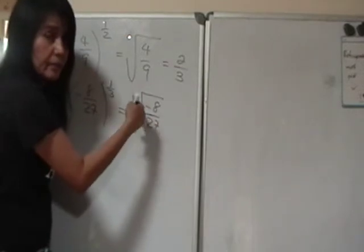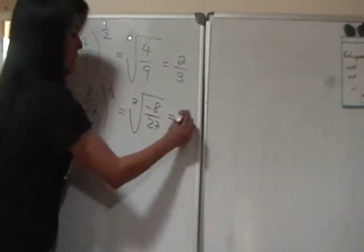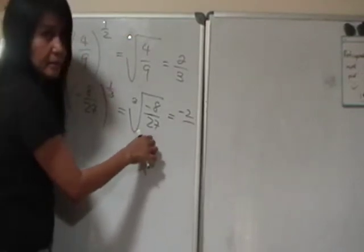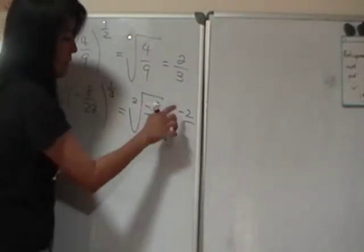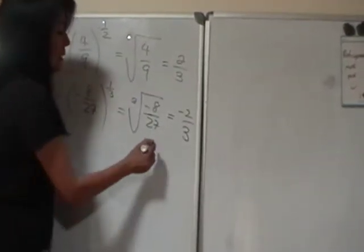And you know you have 3 2's there. But you need 3 negative 2's, so you'll have negative 2 on top. And then 27 is really 3 3's, 3 times 3 times 3. Cube root of the 3 3's is 3. So you have negative 2 over 3.